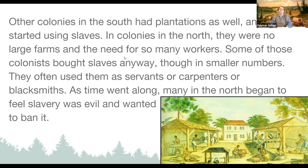Other colonies in the south besides Virginia had plantations as well and started using slaves too. In colonies in the north, there were no large farms and they didn't have a need for as many workers — that was one of the first differences between the north and the south. In the north, even some colonists bought slaves, though in much smaller numbers, and often used them as servants or taught them to be carpenters or blacksmiths.